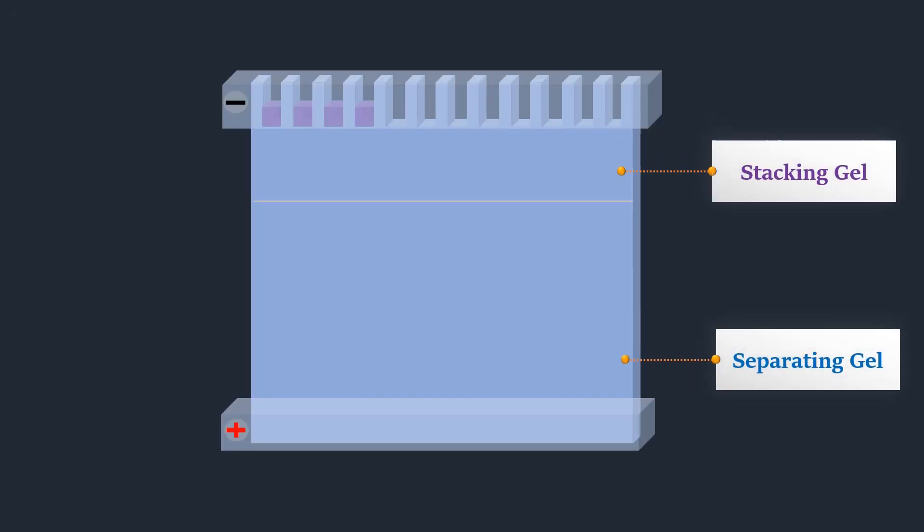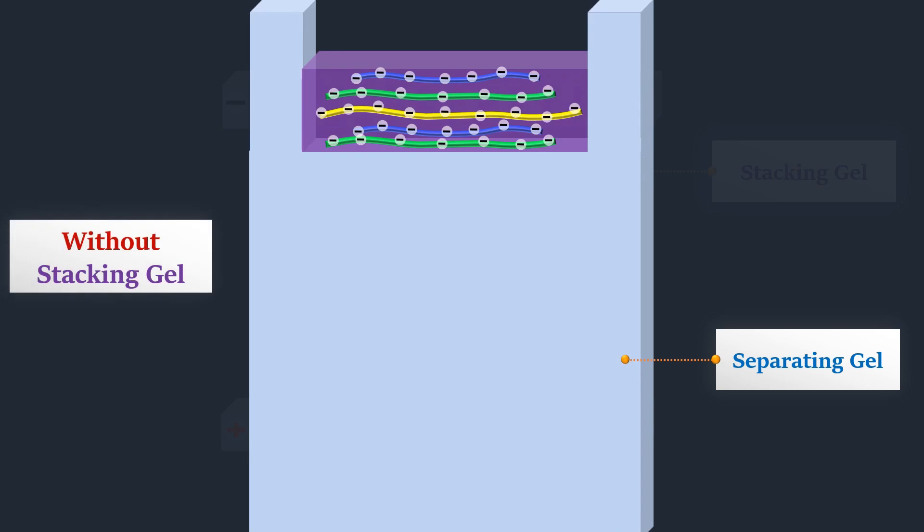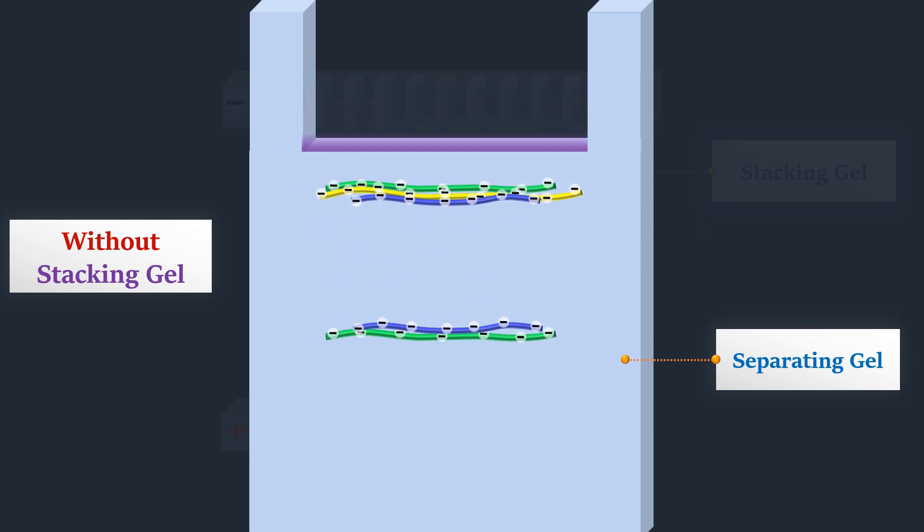The stacking gel is used to ensure that all of the proteins arrive at the separating gel at the same time. Because gel wells are around 1 cm deep, in the absence of a stacking gel, proteins would all enter the separating gel at different times, resulting in very smeared bands.